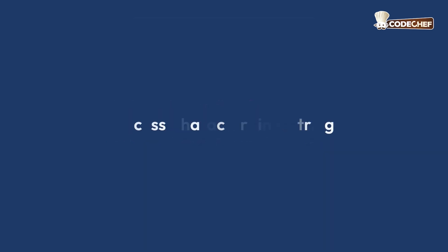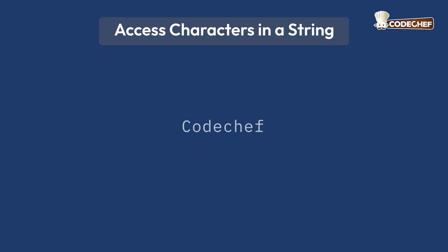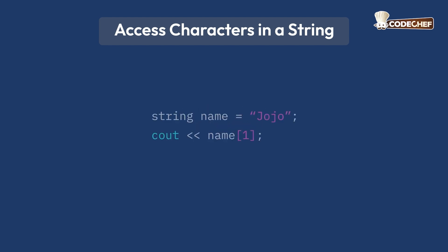Accessing characters in a string: Strings are essentially sequences of characters. Each character in the string can be accessed using an index. String indexing starts at 0, which means the first character is at position 0, the second at 1, and so on. Here's an example.